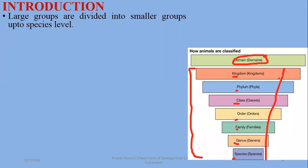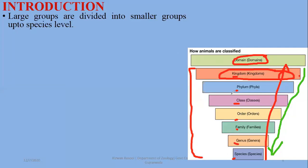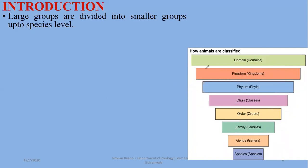As you move from a lower category to a higher category, you include more organisms. The higher the category, the more inclusive it is — for example, kingdom is a higher category and includes more organisms. The lower the category, the more exclusive it is — species is the lowest category and includes fewer organisms.